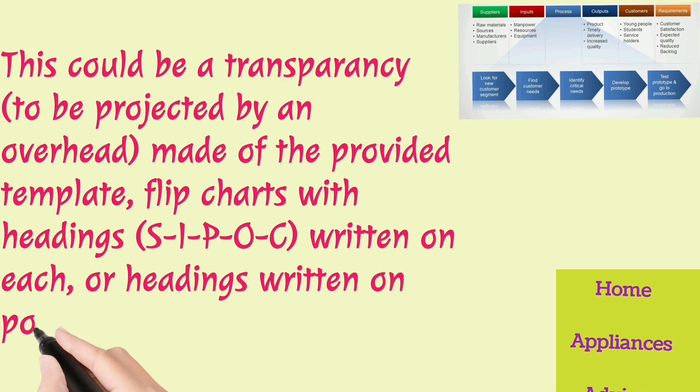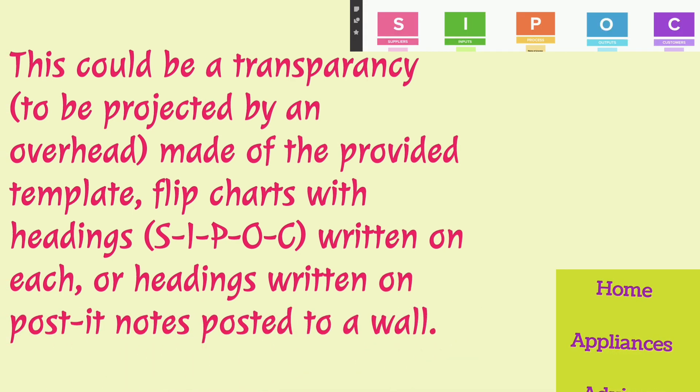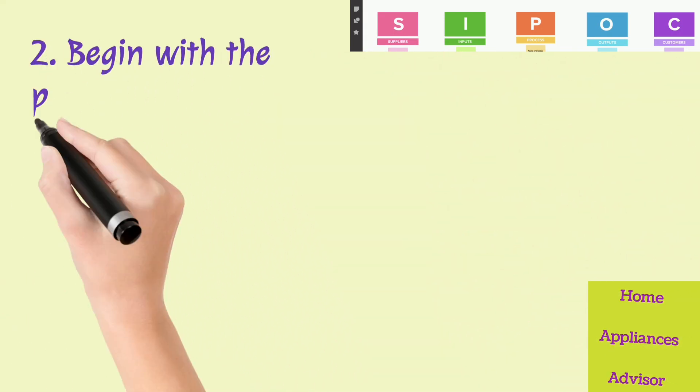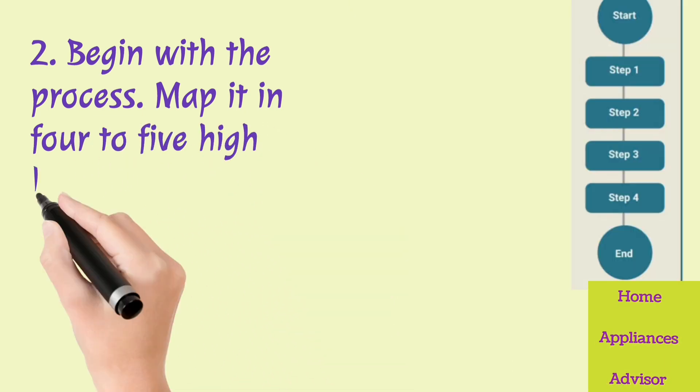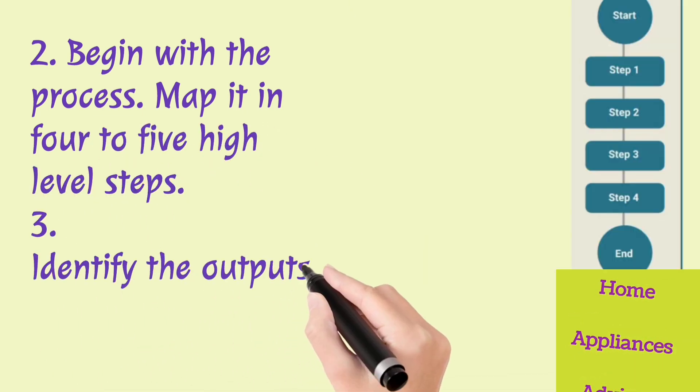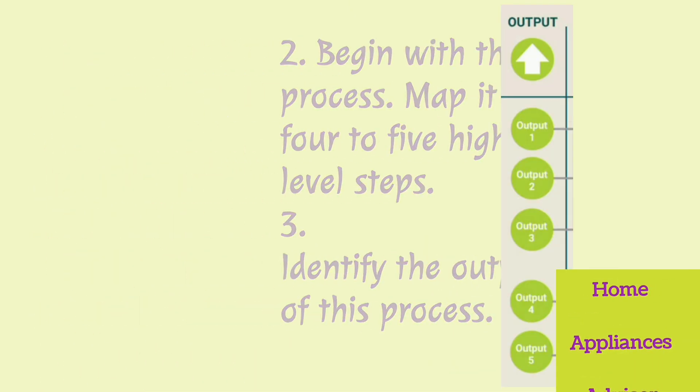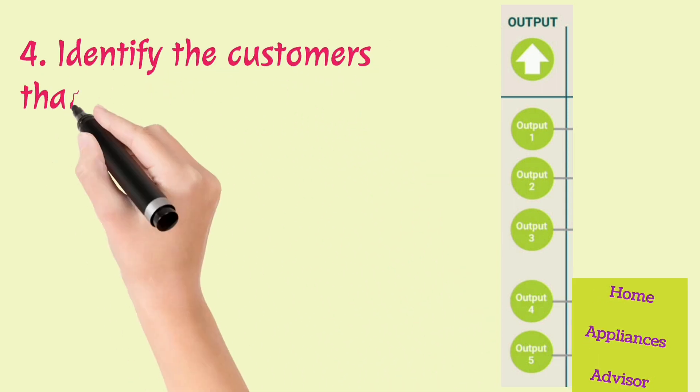Two: Begin with the process. Map it in four to five high-level steps. Three: Identify the outputs of this process. Four: Identify the customers that will receive the outputs of this process.